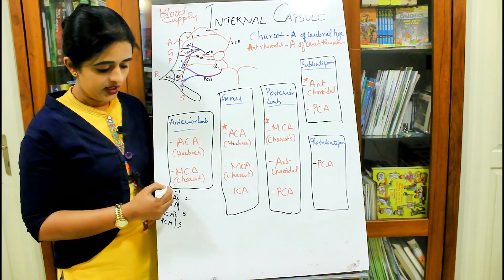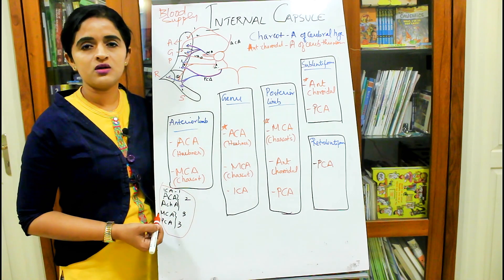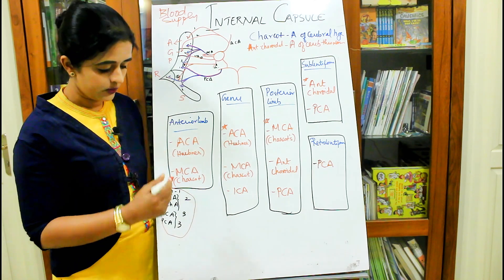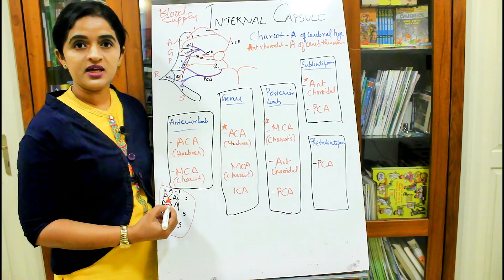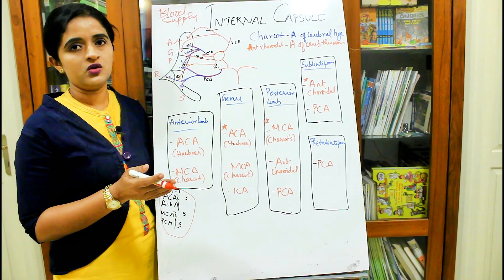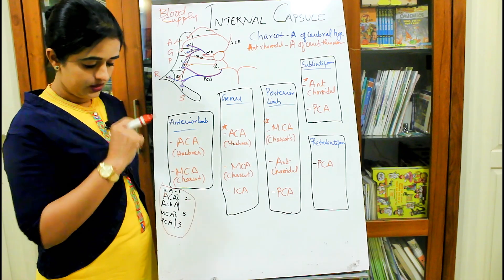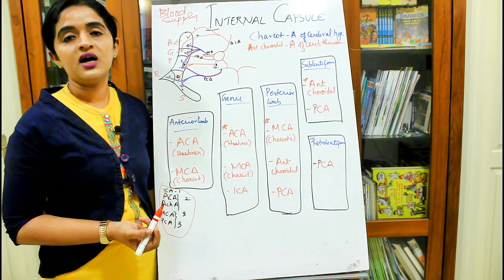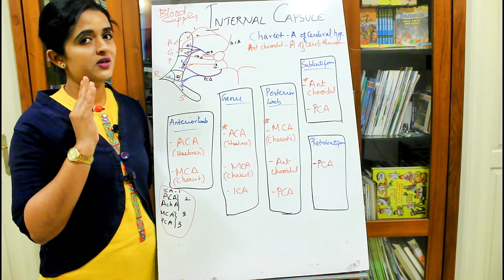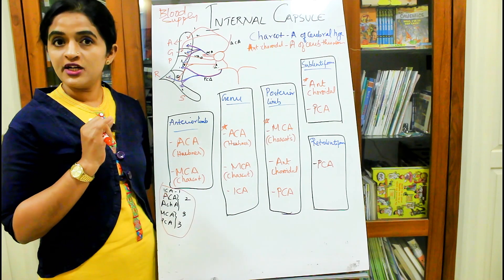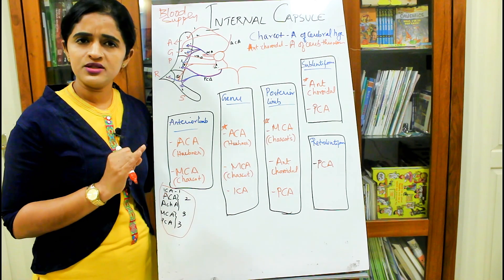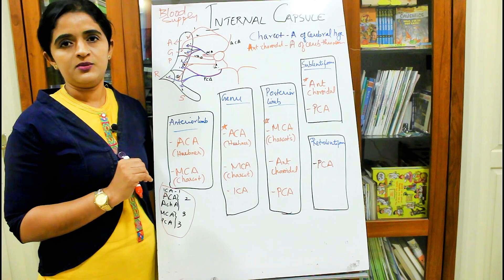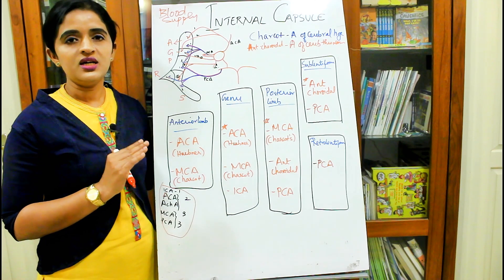Before moving on to the details, I would like you to remember this small concept. The internal carotid artery gives one direct branch to supply the internal capsule. Then two arteries starting with 'A' — the anterior cerebral and anterior choroidal — each give two branches. And the middle cerebral and posterior cerebral each give three branches. So: internal carotid — one direct branch; anterior cerebral and anterior choroidal — two branches each; middle cerebral and posterior cerebral — three branches each.